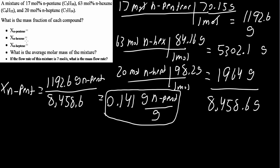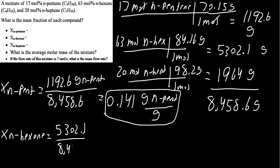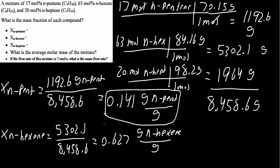Now we need the same thing for hexene. The mass fraction of n-hexene, x_hexene, equals 5302.1 divided by the total of 8458.6, which gives us 0.627 grams of n-hexene per gram of mixture.